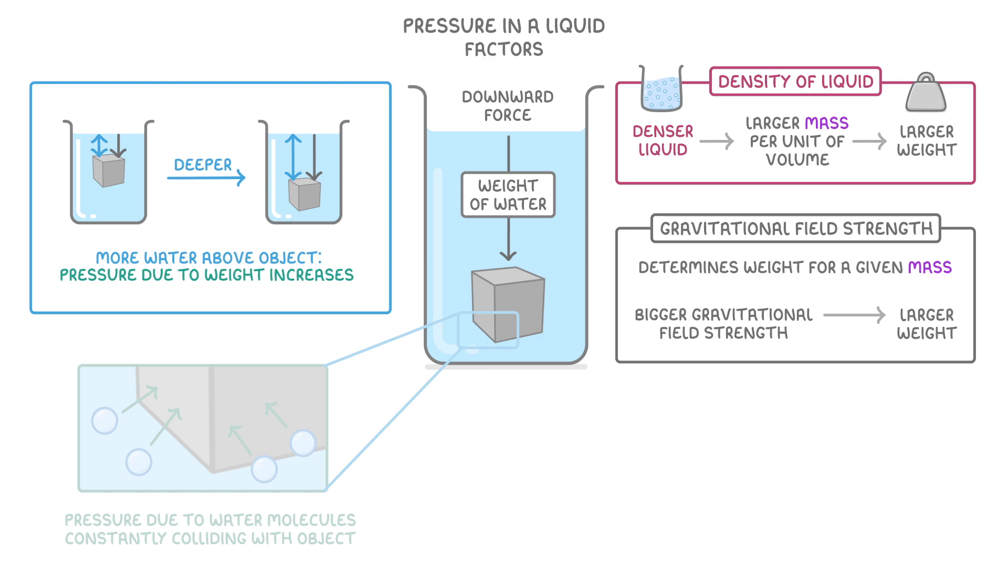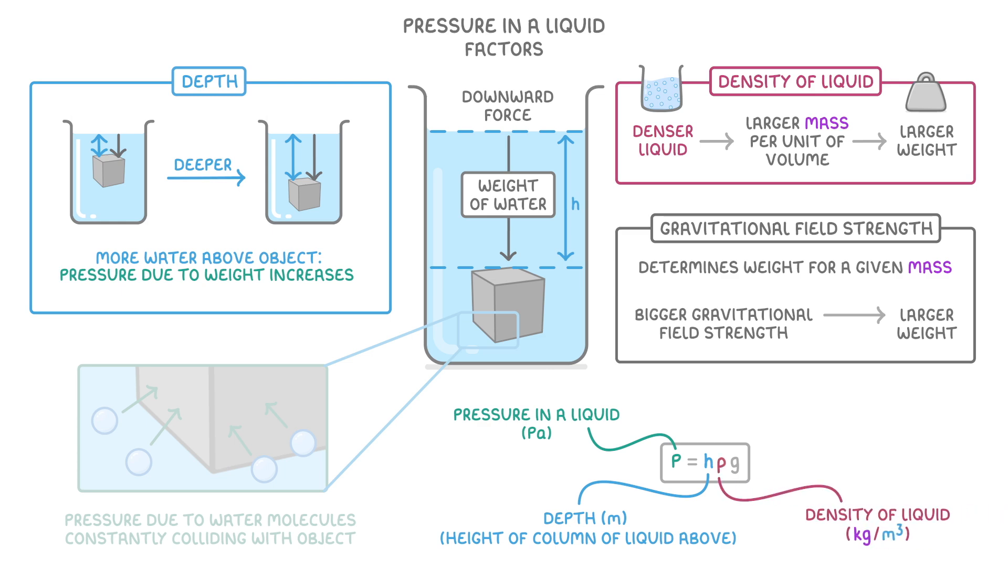We can see all of this if we look at the equation for pressure in a liquid. This tells us that the pressure, measured in pascals, is equal to the height of the column of liquid above the object, which is basically just the depth, times the density of the liquid, times the gravitational field strength.